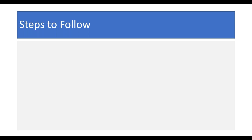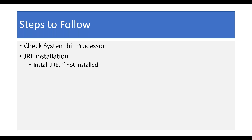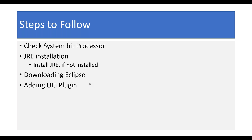To start with, I will summarize the complete steps. First, we need to check our bit processor so that we can install the JRE. If JRE is not installed, you might wonder why JRE is required — Eclipse runs on JRE. UI5 itself has no relationship with JRE, but to have Eclipse we need JRE. Then we will download Eclipse, check it is running fine, and since Eclipse does not come with UI5 by default, we need to explicitly add the UI5 plugin.